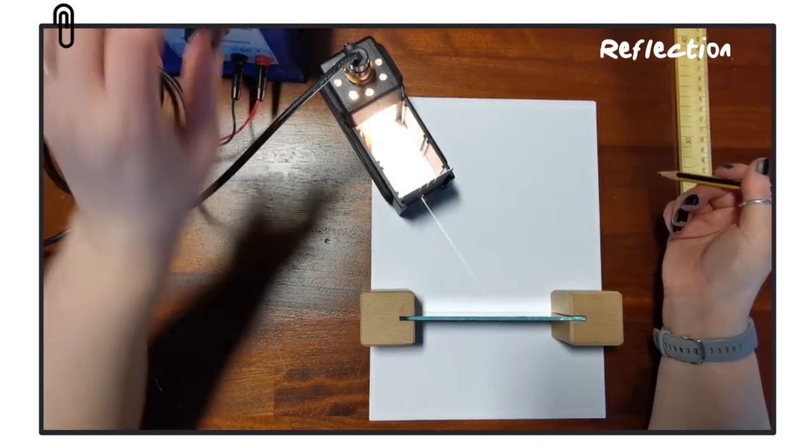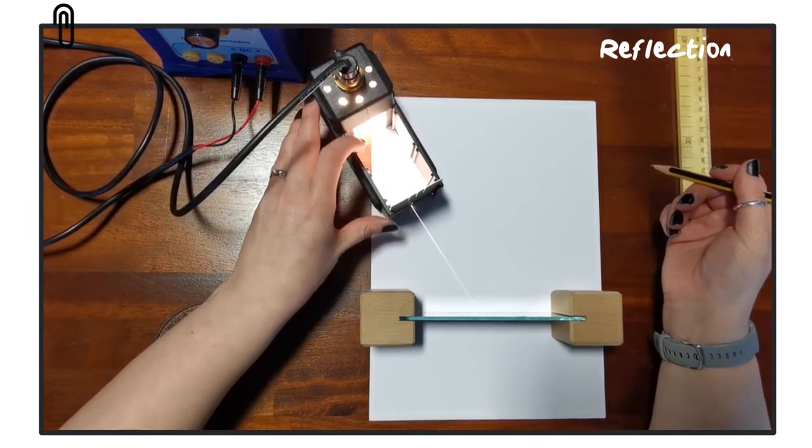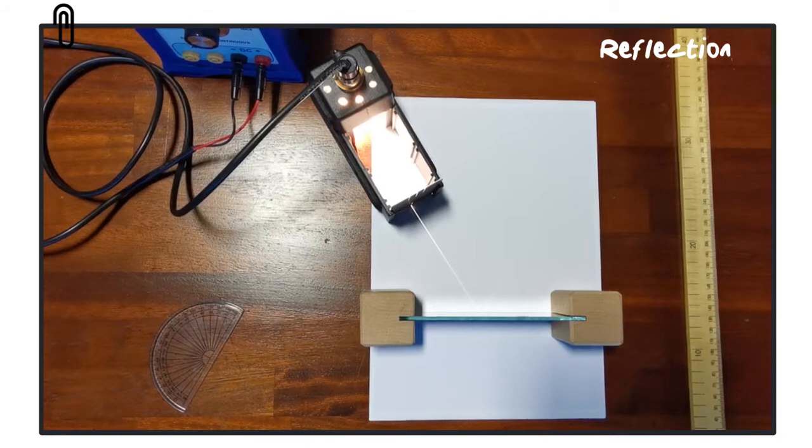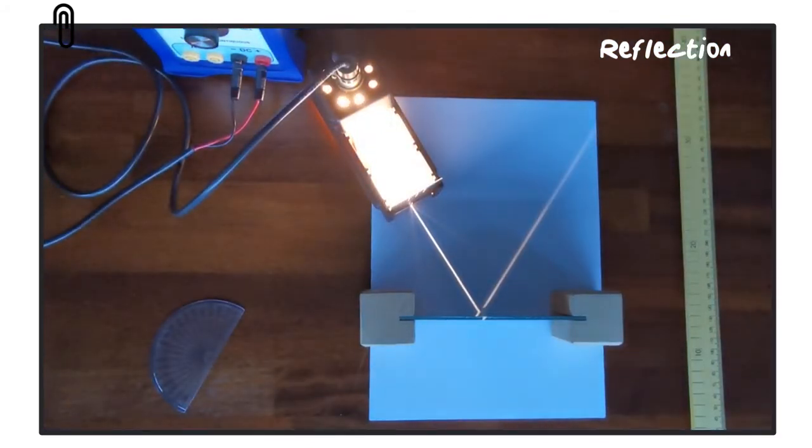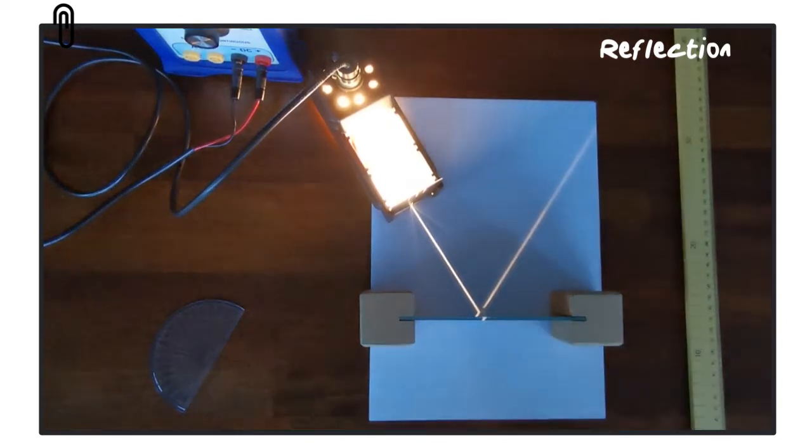So we can then turn on the ray box and direct that narrow beam of light towards the mirror, and what will happen is the light will strike the mirror and then be reflected. It is much easier to see whenever you turn the lights off.